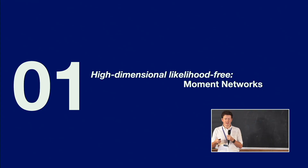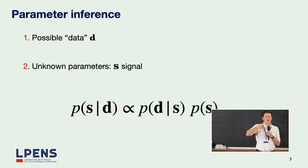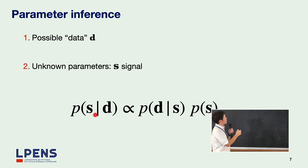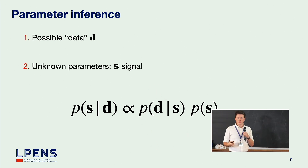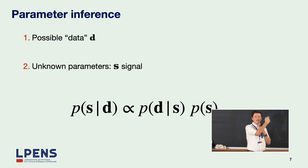First, high-dimensional likelihood-free inference — in particular, moment networks, which Ben discussed before. In parameter inference, we have some data drawn from some distribution and some unknown parameters. In our case, the unknown parameters are the individual elements of our signal in our B-mode maps. In likelihood-free inference, draws of data from this conditional probability distribution — which are just simulations — and labels of the true values allow us to reconstruct conditional probabilities.